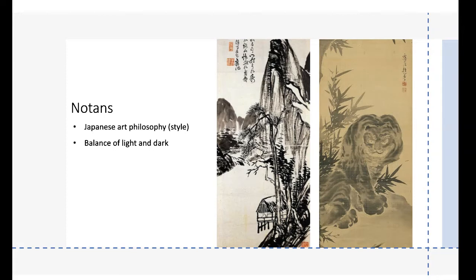Notans are originally a Japanese art philosophy or style, and it's the balance of light and dark. If you look at these Japanese pieces of art, you can see the balance of light and dark — it's about half dark and half light — but they're also using it to create their pictures. These are much more complex examples of Notans, but I'll show you some simpler examples in the following slides.